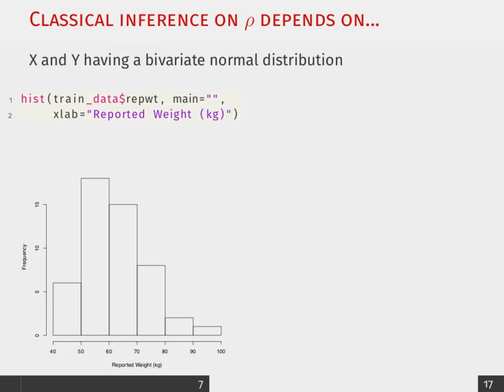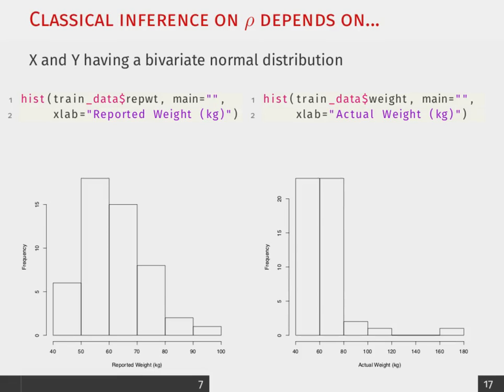So let's look at our data and we can see at least for the distribution of reported weight, that actually seems to be quite normally distributed. But when we look at the actual weight, we find that in fact we have a pretty wide variation...